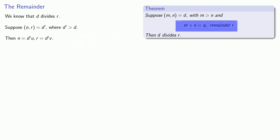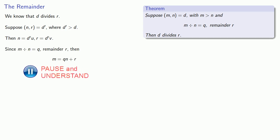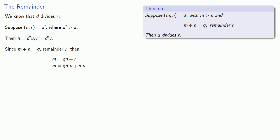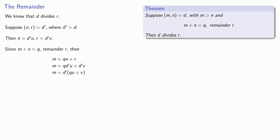And since M divided by N is Q with remainder R, then from our definition of division, we know that M is QN plus R. And equals means replaceable — we know what N is and we know what R is, so we can replace them. And now we have a factorization of M: D prime times (QU plus V).